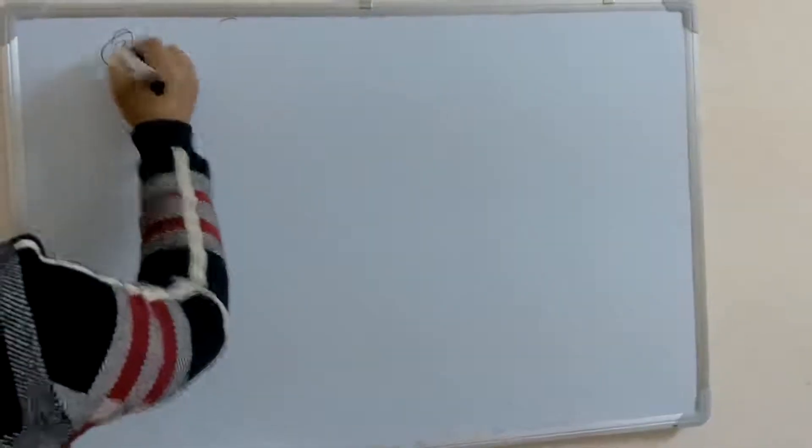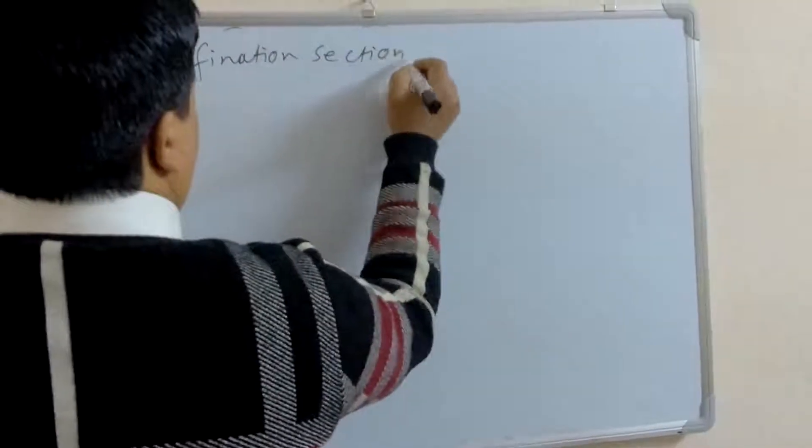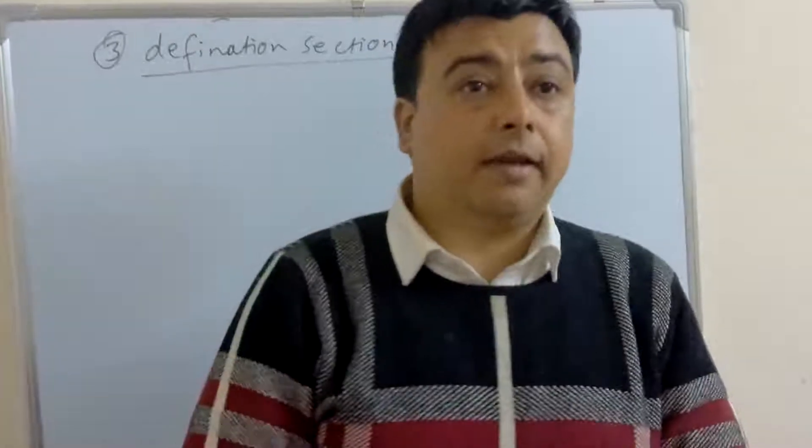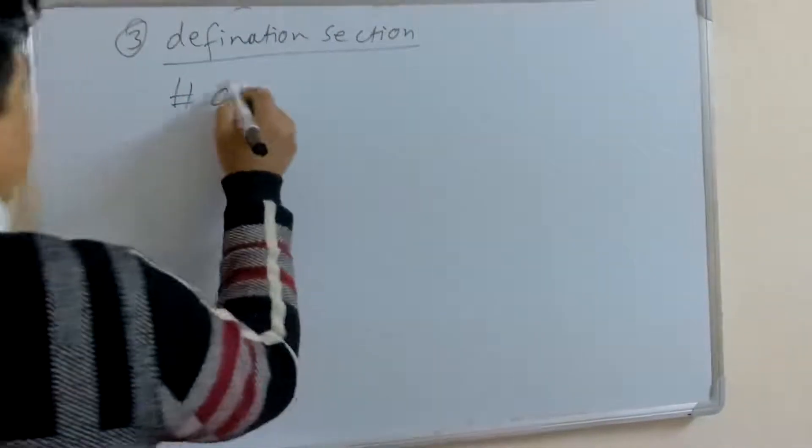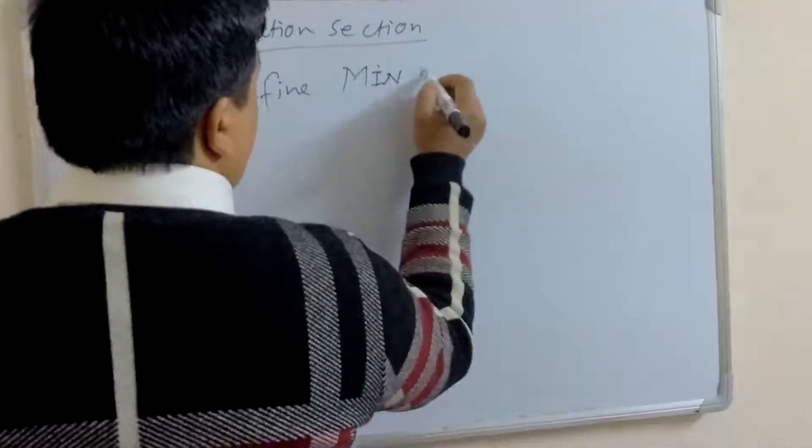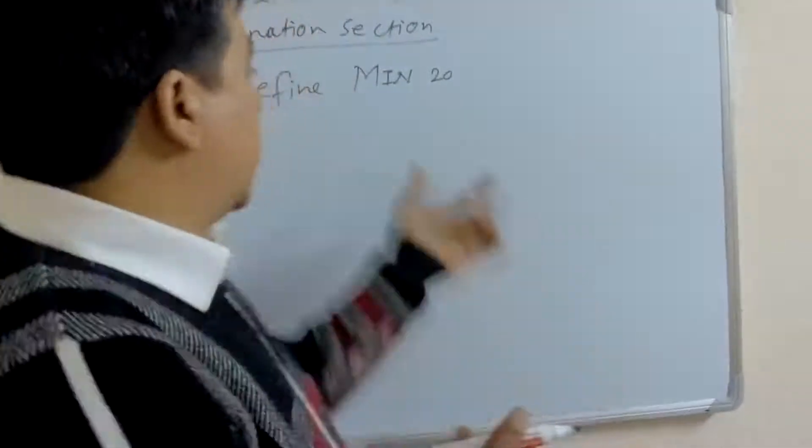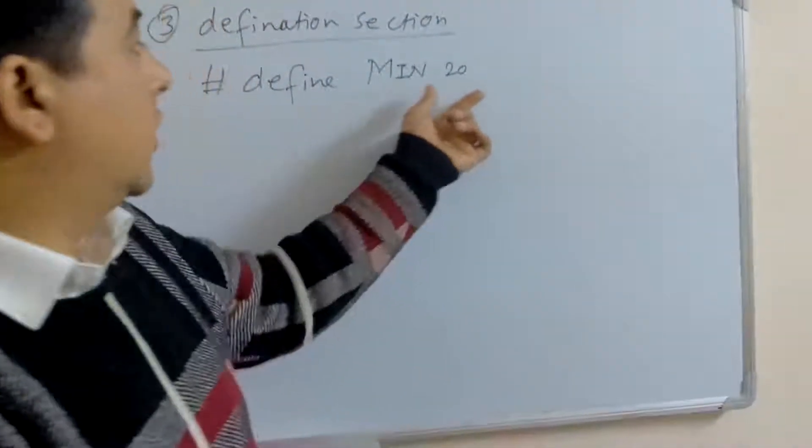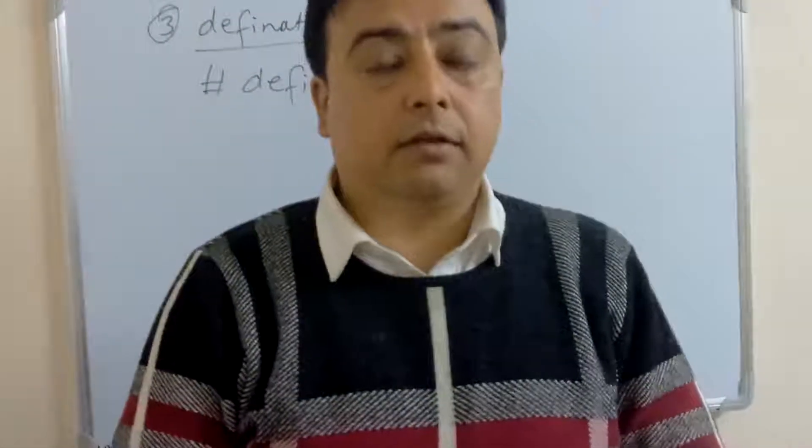Third one is definition section. This definition section is used to define all the symbolic constants. Macros are known as symbolic constants. For example, #define min 20. Whenever we use min in the program, we can use the value 20 in that program. Min is used as 20 instead of min. This is known as definition section.